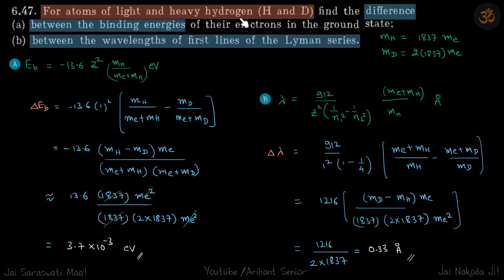So for atoms of light and heavy hydrogen (H and D), find the difference in binding energies and difference in wavelengths of first lines of Lyman series. We know our modified equations for binding energy will be this.